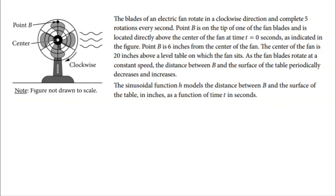The blades of an electronic fan rotate in a clockwise direction and complete five rotations every second. Point B is on the tip of one of the fan blades, located directly above the center of the fan at time t equals zero. Point B is six inches from the center of the fan. The center of the fan is 20 inches above a level table, and the blades rotate at a constant speed. The sinusoidal function H models the distance between B and the table surface in inches as a function of time t in seconds.